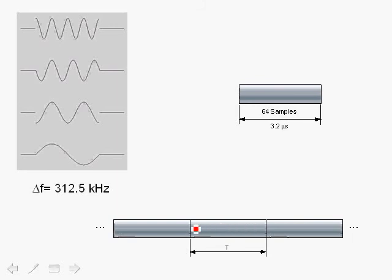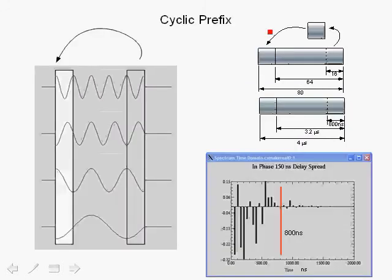The samples have a cyclic nature to them — this is one of the bases of the cyclic prefix concept and how we can use it to combat inter-symbol interference. Here we show the OFDM symbol which is 64 samples long, 3.2 microseconds in the time domain. We've separated out the carriers and the OFDM symbol is the addition of all these carriers.